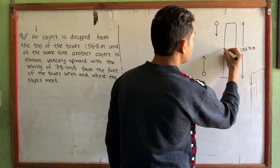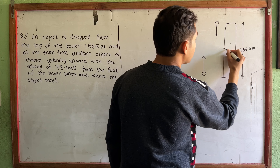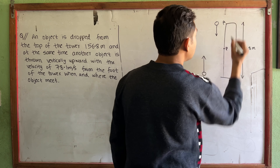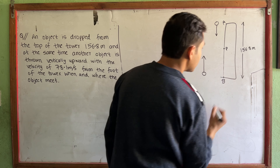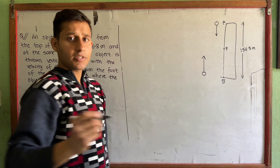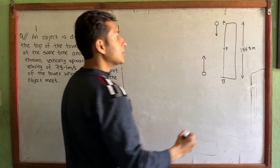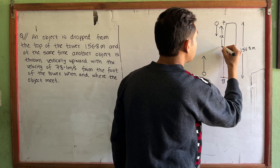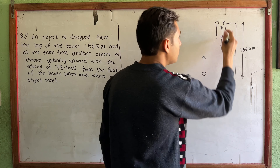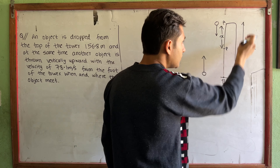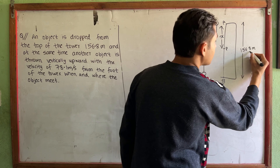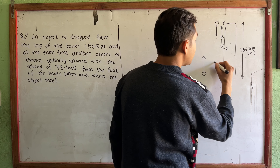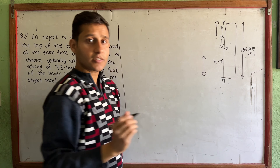Suppose B is a point where the two objects meet. The distance from the top to B is x. So the total height is h, and h minus x is the distance from B to the foot of the tower.